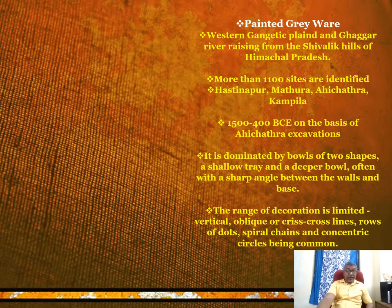Painted Grey Ware culture potteries are found in the Ganga river basin, on the Shivalik hills of Himachal Pradesh. More than a thousand sites have been identified with this Painted Grey Ware pottery - for example, Hastinapur, Mathura, Ahichchhatra, Kampila, etc. The date given for these sites is 1000 to 400 BC, on the basis of the Ahichchhatra excavation.